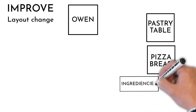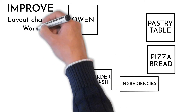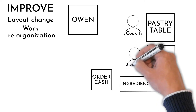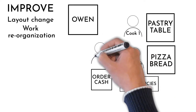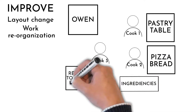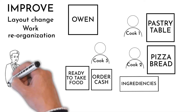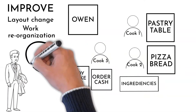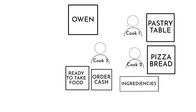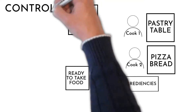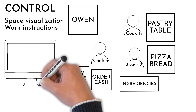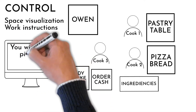The second change moved the oven closer to the pastry area, surrounded by ingredients, reducing walking by half. The most significant improvement came from work reorganization: the first cook handles pastry, the second makes pizza bread and adds ingredients, and the third manages the oven and cash register. Two of the most frequently ordered pizzas are kept ready on a heating station for quick take-away. To sustain these changes, workspace visualization and instructions were created for each work position, and a measuring system was installed to show customers and the team how fast orders are fulfilled.